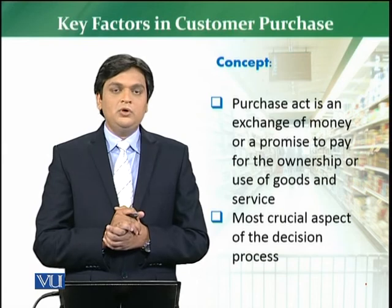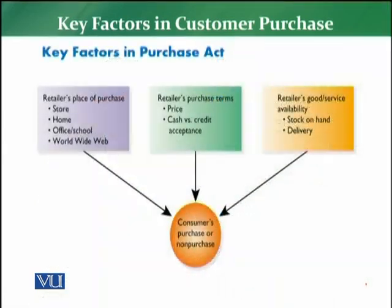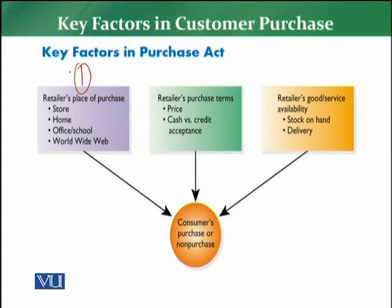There are a lot of factors jo ke kisi na kisi tariqe se purchase act ko influence kerthi hain. Let me discuss all the factors one by one. Toh sab se pahle humare paas hai retailer's place of purchase. Yeh pehla factor hai — retailer ki location. Kya woh store based hai, physical location ke oopar kaam kar raha hai, jis se customer ya toh purchase karay ga ya non-purchase karay ga. So location is very important. Retailer ko identify karna hai ke kya woh location customer ko convenient hai, kya customer ke liye it is easy to go and shop at that location.